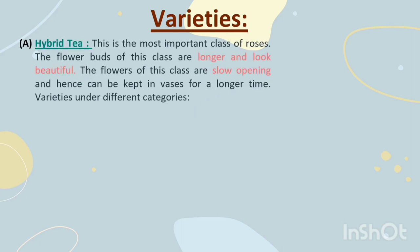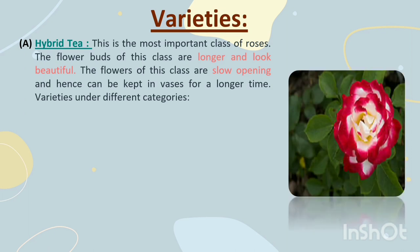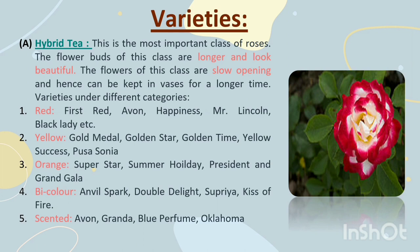Varieties. First: Hybrid Tea. This is the most important class of roses. The flower buds of this class are longer and look beautiful. The flowers are slow opening and hence can be kept in vessels for a longer time. Varieties — in red: First Red, Etoile de Hollande, Happiness, Mr. Lincoln, Black Lady. In yellow: Gold Medal, Golden Star, Golden Time, Yellow Success, Pusa Sonia. In orange: Superstar, Summer Holiday, President, Grand Gala. In bi-color: Anvil Spark, Double Delight, Supriya, Kiss of Fire. In scented: Etoile de Hollande, Granada, Blue Perfume, Oklahoma.